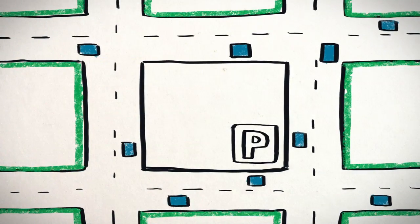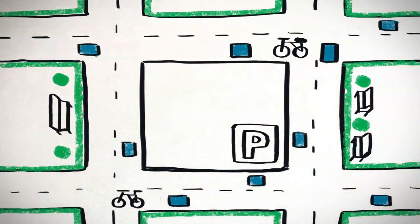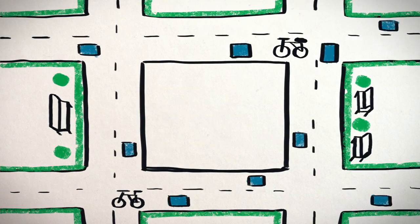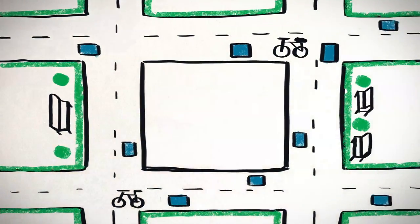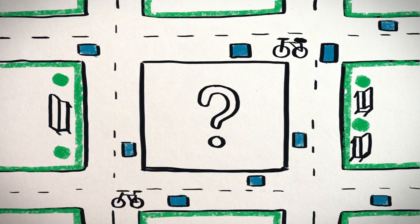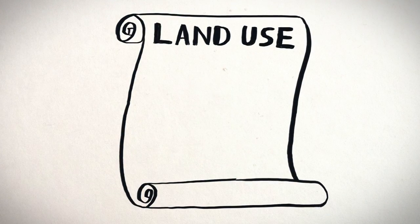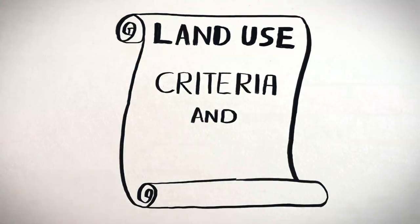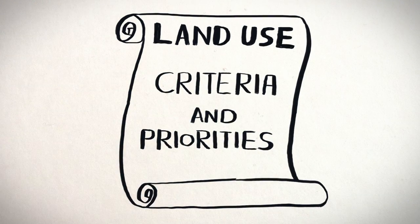We can widen sidewalks, plant trees, put in bike lanes and benches. We can get rid of parking lots and build affordable housing, or public parks, or whatever. Establishing the criteria and priorities for newly available public land will be critical to making sure communities get what they need.